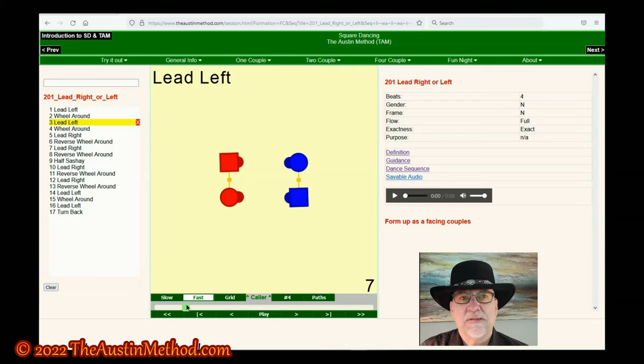This dance sequence has a lot of flow built into it. So wheel around leads very nicely into lead left or lead right. Reverse wheel around and wheel around.